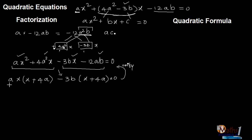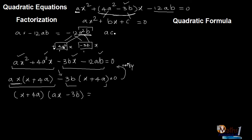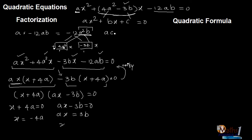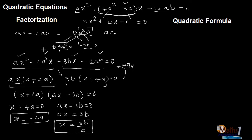From these two groups, the common term is (x + 4a). Once I take (x + 4a) common, I'm left with (ax − 3b) = 0. So I can equate both factors to zero and find the value of x. x + 4a = 0 gives x = −4a. And ax − 3b = 0, transposing gives ax = 3b, so x = 3b/a. These are the two roots for the given quadratic equation by using the factorization method.